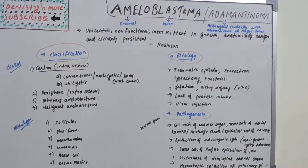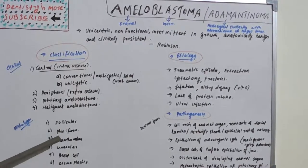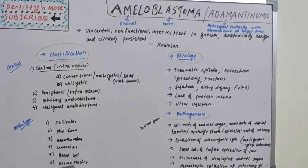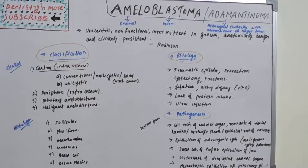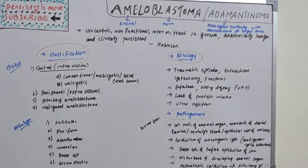In the clinical classification, multicystic is the most common type. In the histological classification, types are based on histological appearance: follicular, plexiform, acanthomatous, granular, basal cell, and desmoplastic.